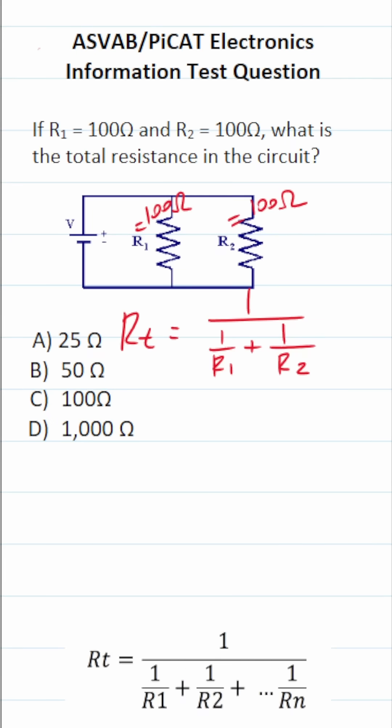So let's plug those values in and solve accordingly. This becomes 1 over 1 over 100. Again, R1 is 100 plus 1 over R2 is also 100. In the denominator, we're simply adding 1 over 100 plus 1 over 100.